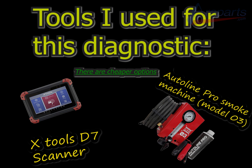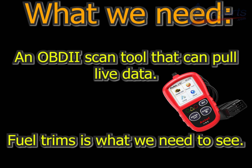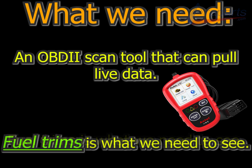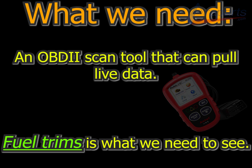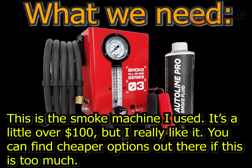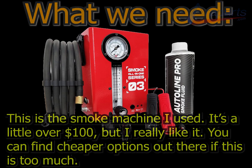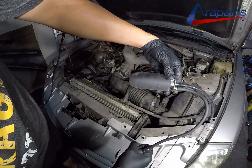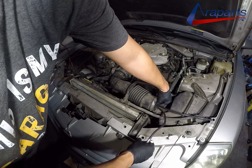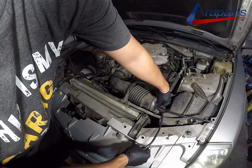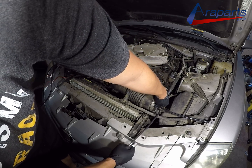All we need is a scanner that can pull live data — fuel trim specifically. These can be found for under a hundred dollars. We also need a smoke machine, which can also be found for under a hundred dollars. If your smoke machine doesn't have the proper attachments to seal the intake, make sure you get those as well.